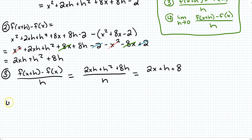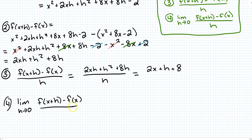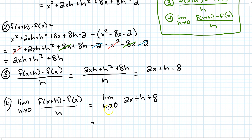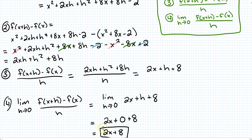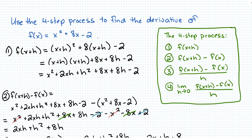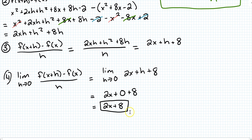Now the last thing is to take the limit as h approaches 0 of what we just found — that's the limit as h approaches 0 of 2x plus h plus 8. Taking the limit just means plugging 0 in for any h's. So I get 2x plus 0 plus 8, which simplifies to 2x plus 8. Using the four-step process, the derivative of x squared plus 8x minus 2 is 2x plus 8.